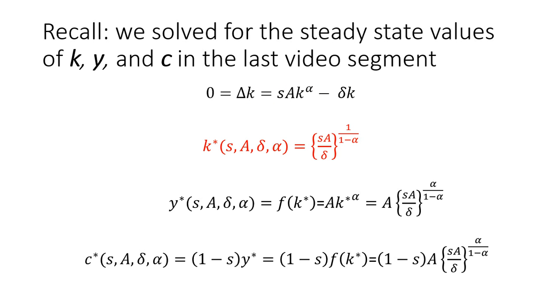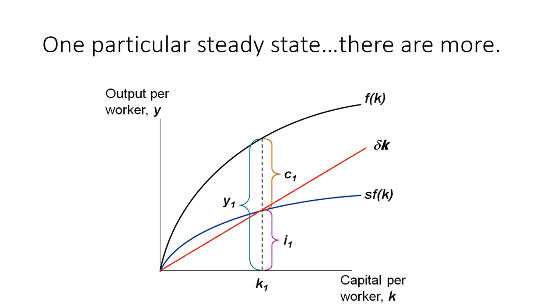And then we could substitute the value of capital per capita in the steady state into our production function to get output, and substitute output into the consumption function to get consumption in the steady state. So diagrammatically, for a given steady state value of capital found at the intersection of savings and investment, it's very easy to see how output y is split between investment and consumption.